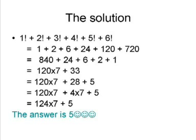720 + 120 = 840, which is 120 × 7, plus the remaining part sums to 33. This can be divided into 124 × 7 + 5, which gives the remainder. Hence the answer is 5.